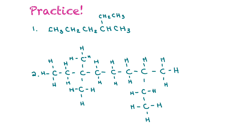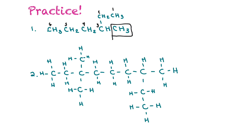Now for some trickier examples. In the first one, counting one path gives five carbons, but if you follow the branch it's actually six — so that's the longest chain. Numbering from the end nearest the branch: carbon one through six, with the branch on carbon three containing one carbon. So this is 3-methylhexane.